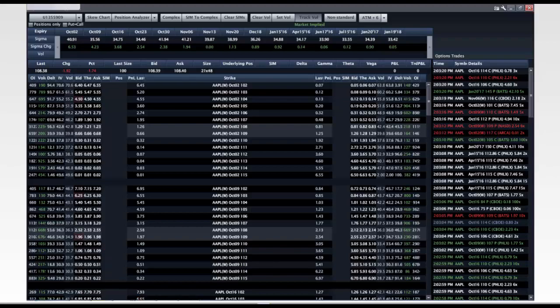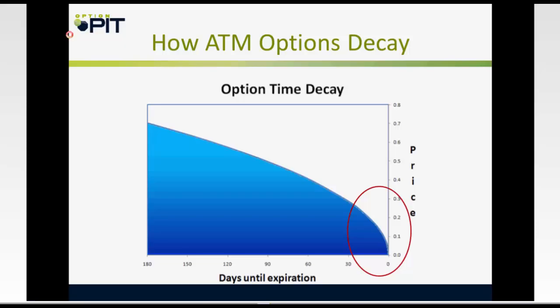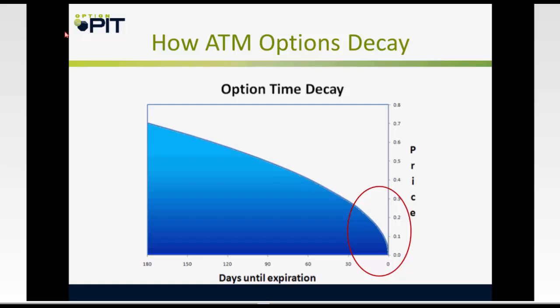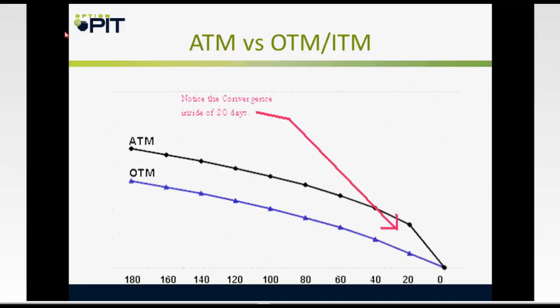A lot of people think option time decay looks linear. This is the way time decay looks for at-the-money options. The big issue is that the closer we get to expiration, there are fewer and fewer actual at-the-money options. At-the-money options decay exponentially; the further you go out-of-the-money from at-the-money, the more linear the decay becomes.